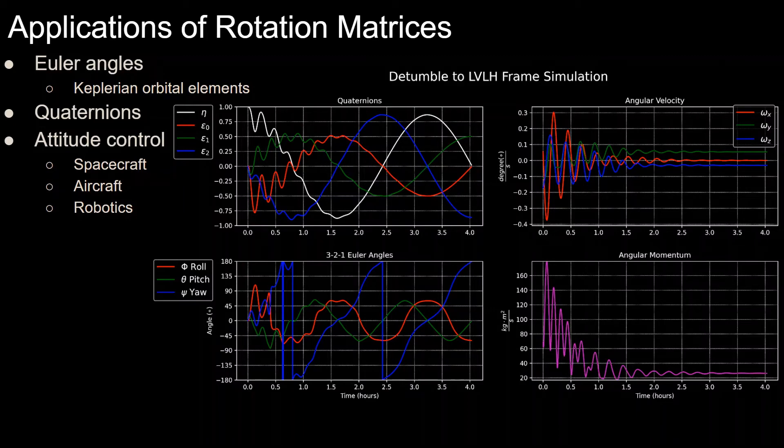So for applications of rotation matrices, I'll be using an example of a spacecraft attitude control simulation, where the spacecraft initially begins tumbling, so it has some angular velocity in all three axes, and uses a control law to align itself with a local vertical, local horizontal, or LVLH reference frame. This simulation needs rotation matrices to be able to calculate the orientation of the LVLH frame, which is the target at each time step, in order to calculate the error in between the current body fix frame to feed that into the control law.